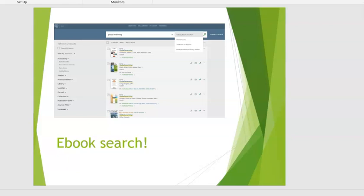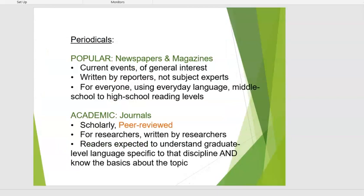Once you have your books and have done some background reading, you have a solid foundation and some ideas on search terms. Then you head into periodical searching — article searching. Periodicals are anything published periodically. A book gets published once; a new edition usually only happens two or three or more years apart. Periodicals are published annually, semester, monthly, weekly, or daily, and they fall into two general categories. Popular periodicals are things like newspapers and magazines — a little bit of everything for a little bit of everyone.